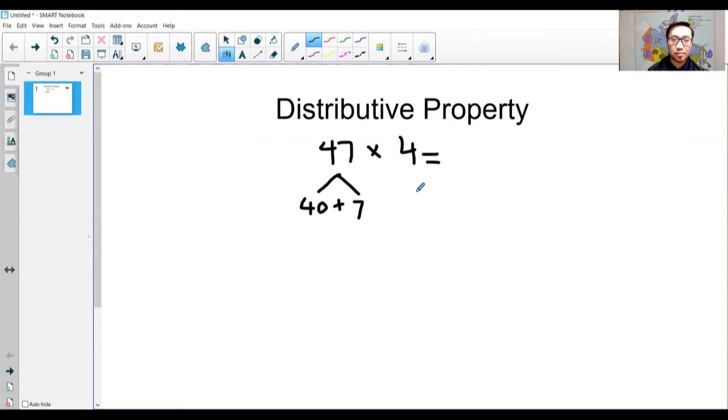Now that we've decomposed the number, we can distribute them with 4. That means that 40 times 4 and 7 times 4 added together is the same as 47 times 4. So, we're going to do just that. In brackets, we're going to put 40 times 4. And we're going to add that with 7 times 4.